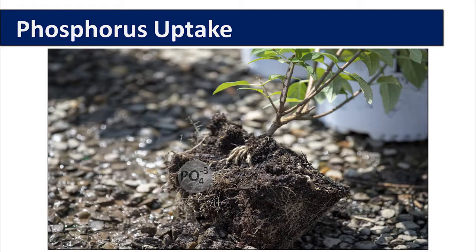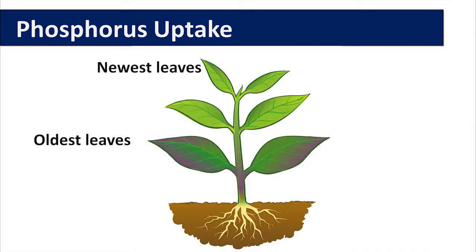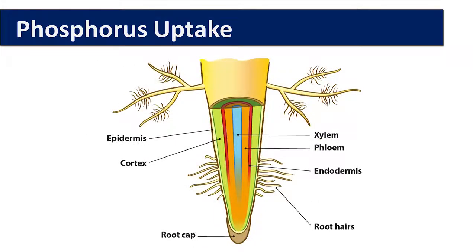If there is inadequate phosphorus in the root system — because there is not enough in the media or you have poorly growing root systems where the phosphorus cannot be taken up by the roots — then phosphorus can be remobilized from the oldest growth and translocated up into the new growth. This occurs via the phloem.